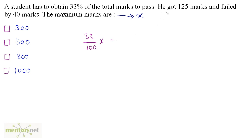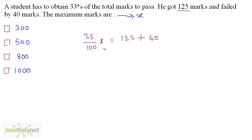The student got 125 marks and failed by 40 marks. This means if he had got 40 marks more than 125, he would have passed. So the passing marks equal 125 plus 40. Therefore: 33/100 times x equals 125 plus 40.